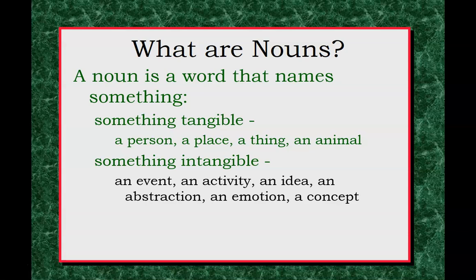Something tangible could be a chair, a dog, a teacher. Something intangible could be happiness — an emotion — or freedom, an idea.